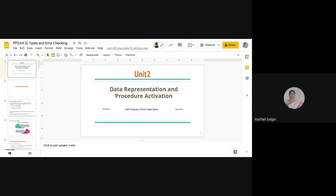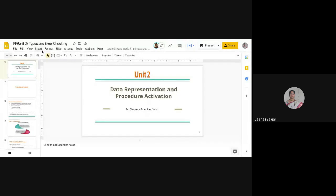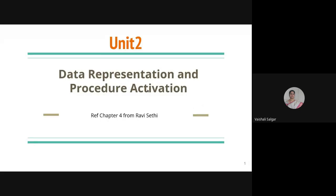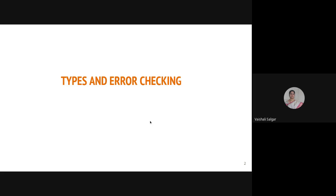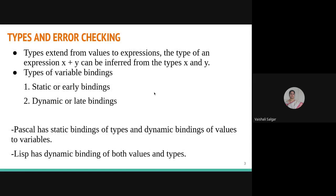We will start now. The last topic from Unit Two is types and error checking. We have already talked about different types, and this particular topic is from Ravi Sethi, Chapter Four. This is the last topic we are going to discuss, and if you have checked, there is one more point — the modeling of data — which we have already discussed in the procedure activation.